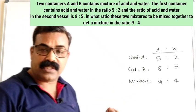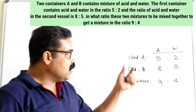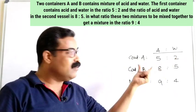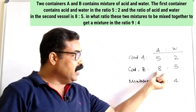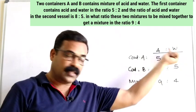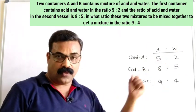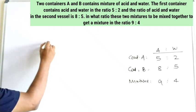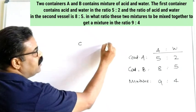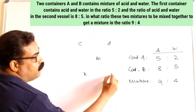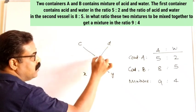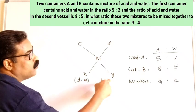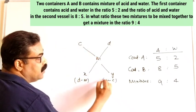To summarize the given information: container A has ratio 5:2 (acid to water), container B has ratio 8:5, and the target mixture is 9:4. We need to find in what ratio to mix them. Using the allegation rule, we have cheaper value (c), dearer value (d), mean value (m), and the relation: x = d − m and y = m − c.